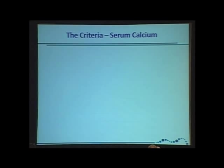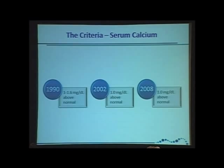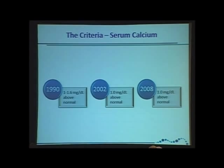Moving on to the criterion of serum calcium. In 1990, it was 1 to 1.6 milligrams per deciliter above normal. That was decided because the number used was 10.4 as the high normal, so 1 mg/dL above would be 11.4, and 1.6 would be 12. They didn't have data to say exactly where things would really get bad for a patient — they just said if you're getting to 12, that seems too high. When you get to 2002, that was dropped down to 1 mg/dL above normal, and in 2008 it was kept at 1 mg/dL above normal.